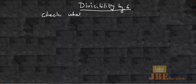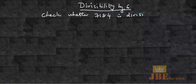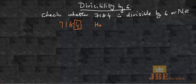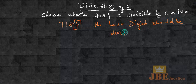Check whether 7184 is divisible by 6 or not. To check this condition, consider the number's last digit. The first condition is: the last digit should be divisible by 2.